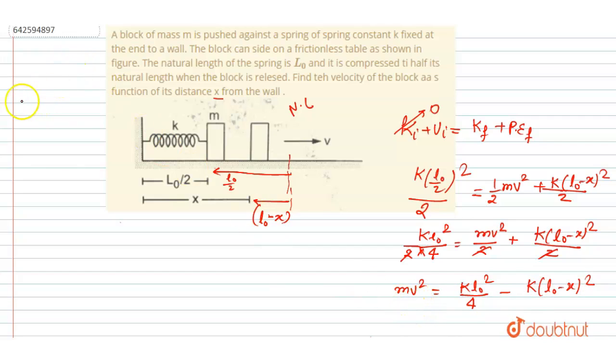You can see V is a function of x. So you can write the function now. It will be V equals to under root of 8 L0 x minus 3 K L0 square minus 4 x square.